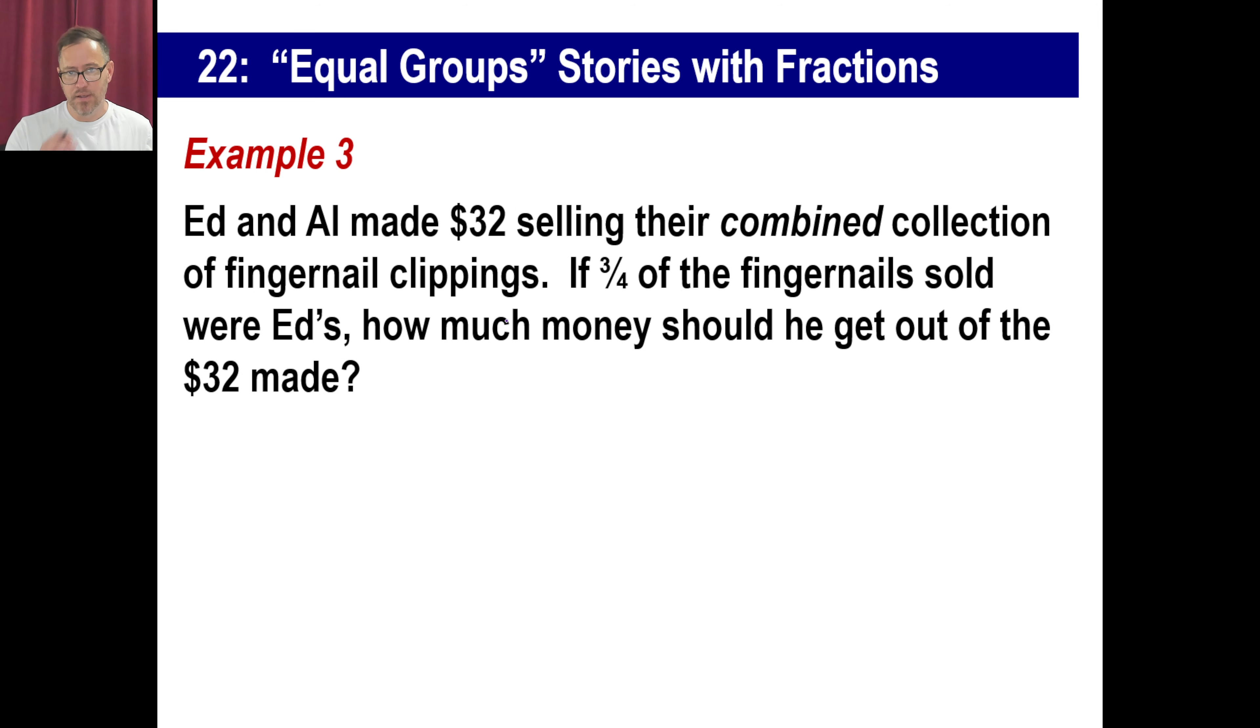Ed and Al made $32 selling their combined collection of fingernail clippings. If three-fourths of the fingernail, this is, clipping just means like one, you know, each fingernail is just had one piece. So 20 pieces total. Three-fourths of the fingernails sold were Ed's. How much money should he get out of the $32 made? So three-fourths. And here we go. And then let's just, I don't know, this whole thing is 32. Let's see, three-fourths. Let's divide it into fourths. One, two, three, four. And this is, you know, Ed's, Ed's, Ed's money. Obviously, each one of these is worth eight, because 32 divided by four is eight. This part right here would be eight times three or 24. There you go. That's it.